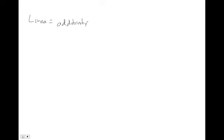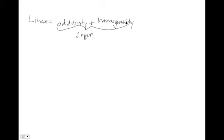Let's now talk about what it means for a system to be linear. A linear system has two properties: an additivity property and a homogeneity property. When you think about these together, we sometimes call that a superposition property.